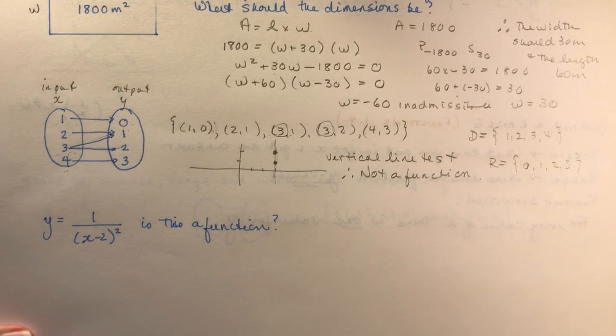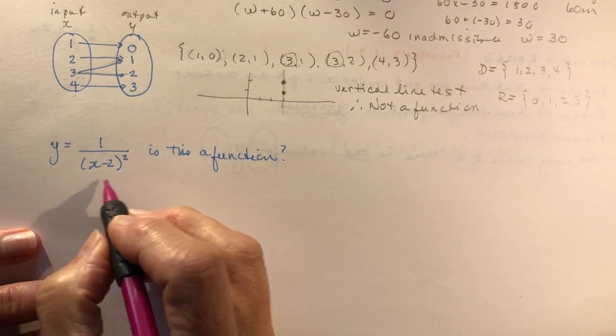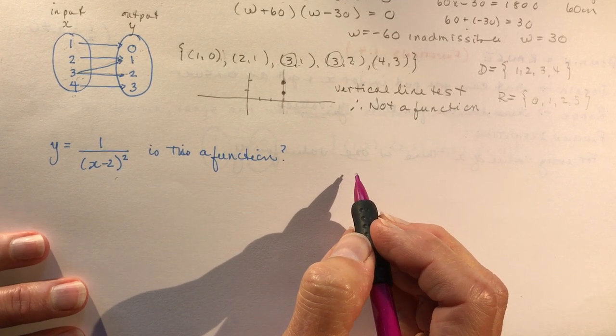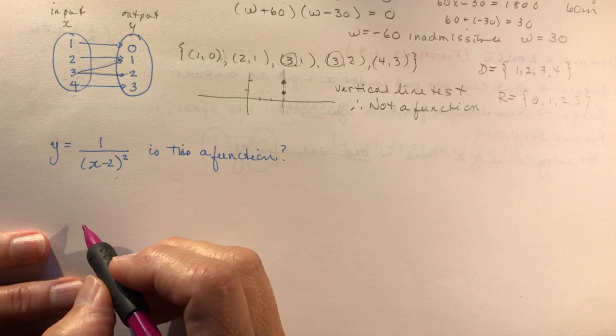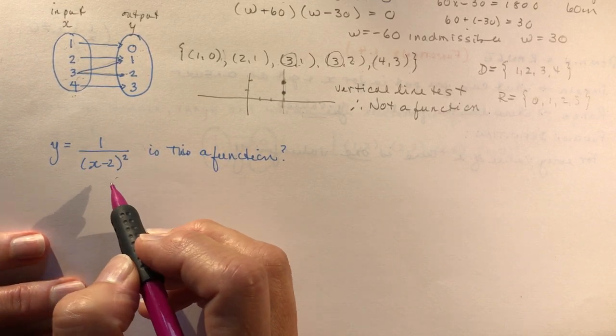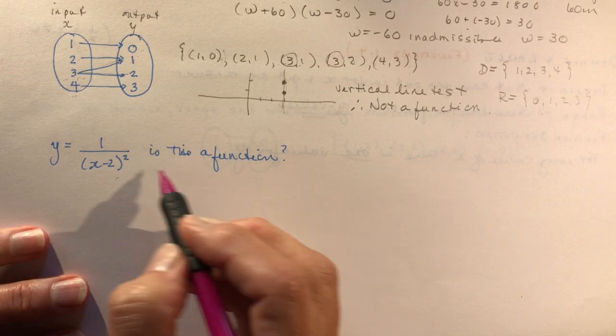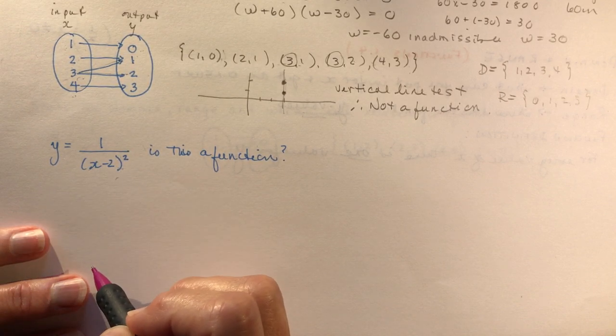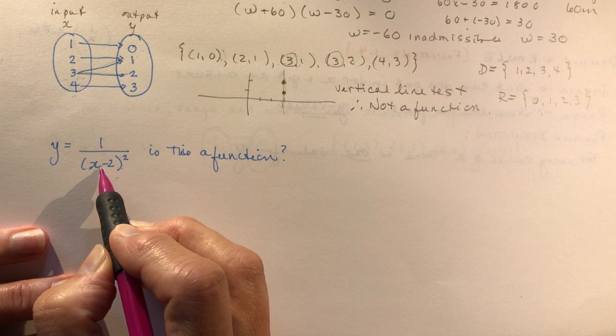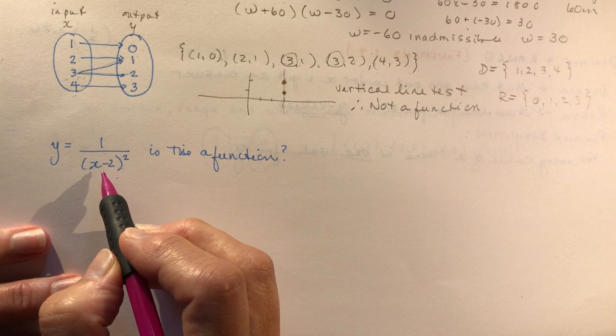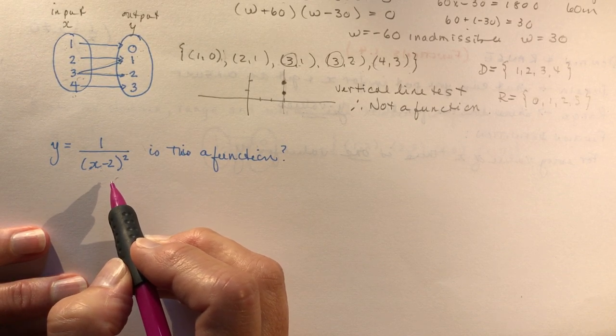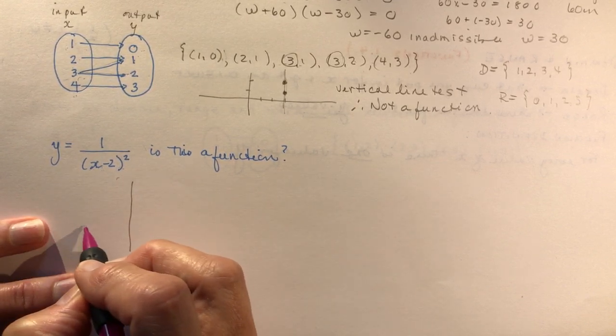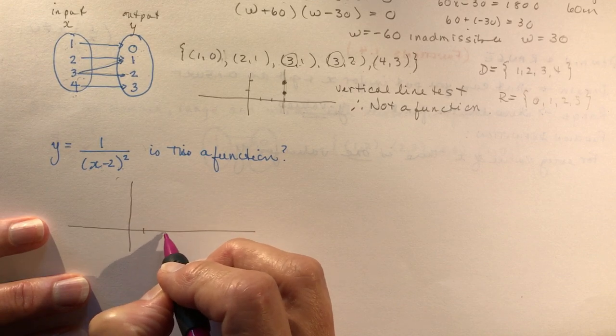A slightly more difficult question. Y equals one over x minus two squared. Is this a function? Now in advanced functions, you're going to learn a lot about graphing functions. And I'll give you a little clue to a lesson further down the road. And that says that you know where the restriction is here for this function. The restriction is x cannot be equal to two. Because if x was equal to two, then you would be having a zero in the denominator, which of course is inadmissible.